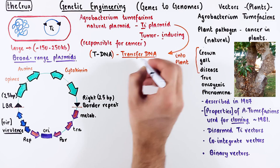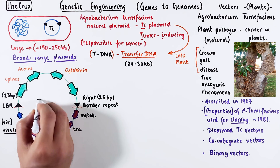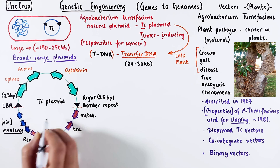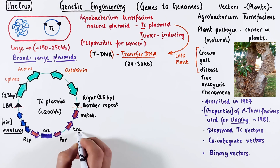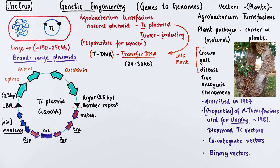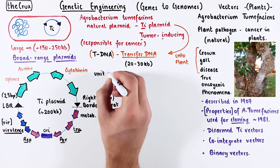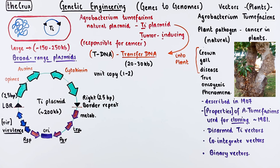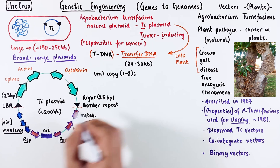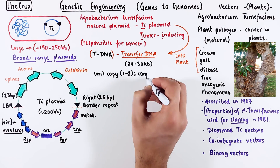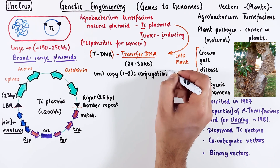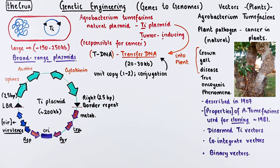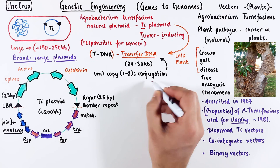The T-DNA portion is only 20 to 30 kb in size out of this entire 200 or so kb Ti plasmid. The rep and par genes ensure that the Ti plasmid is a unit copy plasmid, just like the F plasmid in E. coli. It can conjugate bacteria to bacteria, as well as bacteria to plant. The plant conjugation uses the virulence genes; however, plant conjugation only transfers the T-DNA.